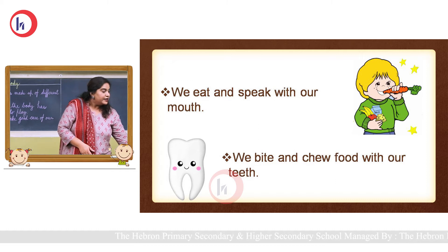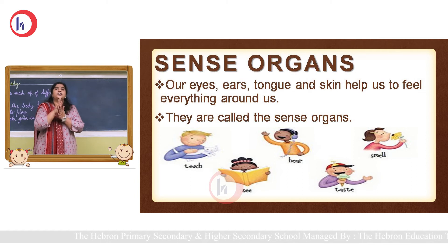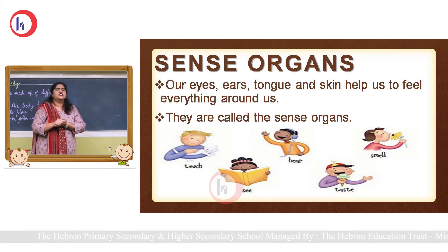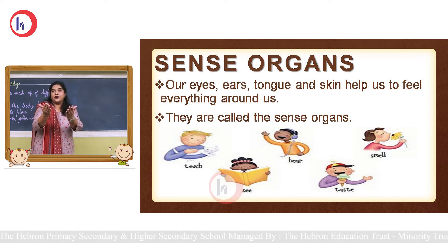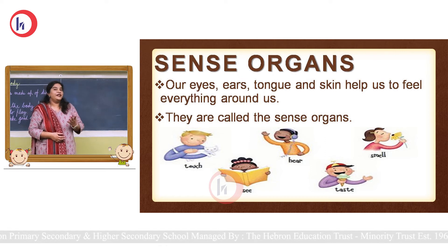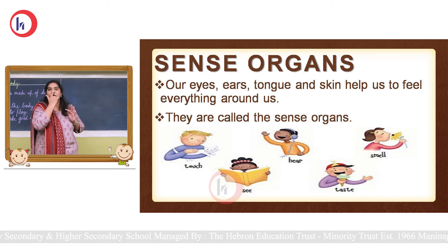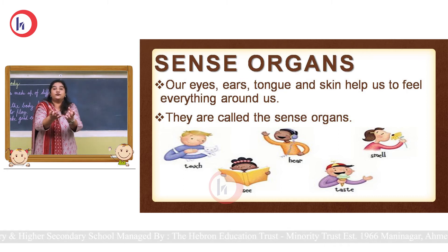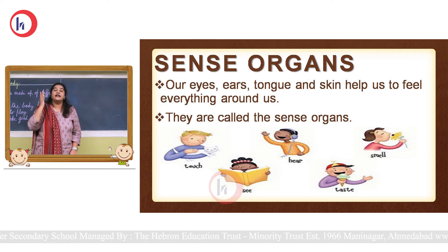Now, if you touch something very soft, or eat something very hot or very spicy, do you feel that? Yes! With which organ do you sense all these things — see, hear, smell, taste, feel? These are called our sense organs. Our eyes, ears, nose, tongue, and skin are called our sense organs. They help us feel the things around us.